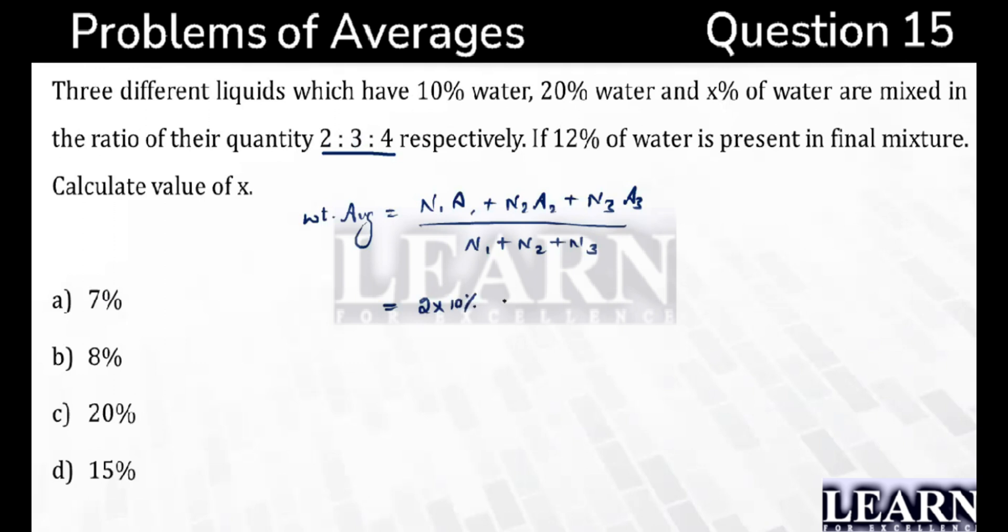N1 is 2 into 10 percentage plus 3 into 20 percentage, 3 times of 20 percentage I am taking plus 4 into X percentage I am taking divided by the total quantity 2 plus 3 plus 4, so I can take it as 9 equals to 12 percentage.